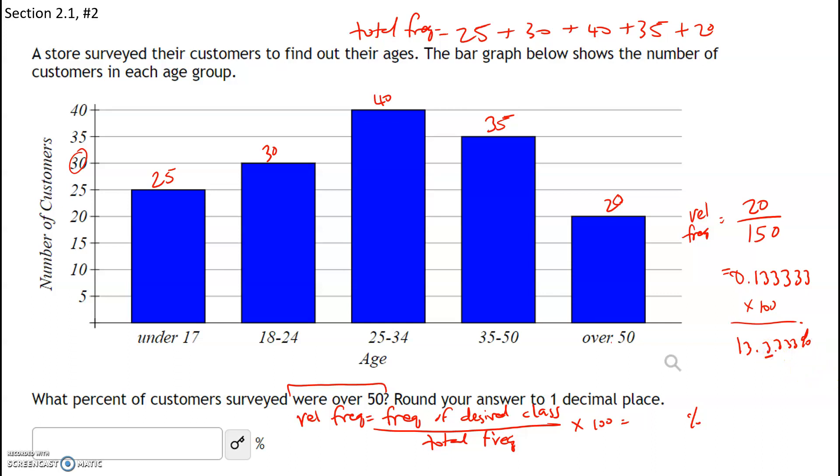So we're going to round to the first decimal. The number after that is four or lower, it's a three. So we're going to keep this as 13.3%, and don't include the percent sign because it's already there.